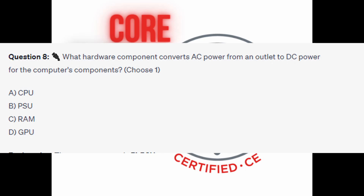Question 8. What hardware component converts AC power from an outlet to DC power for the computer's components? Choose one. Is it A, CPU? Is it B, PSU? Is it C, RAM? Or is it D, GPU?